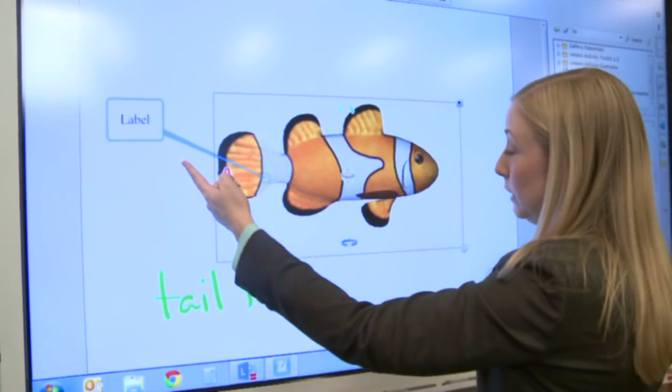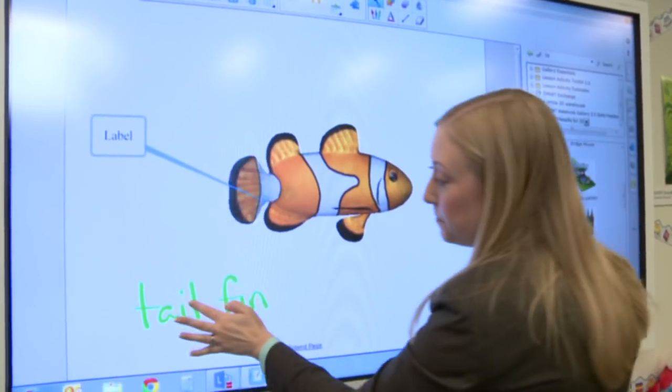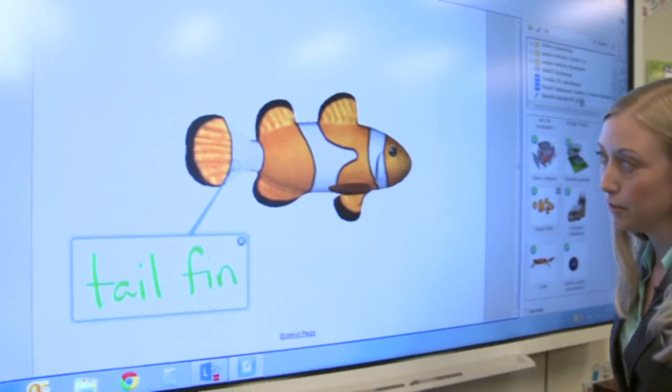You can see here I've also added a label to this 3D clownfish, and then I can use text or pictures on the screen to label the 3D object.